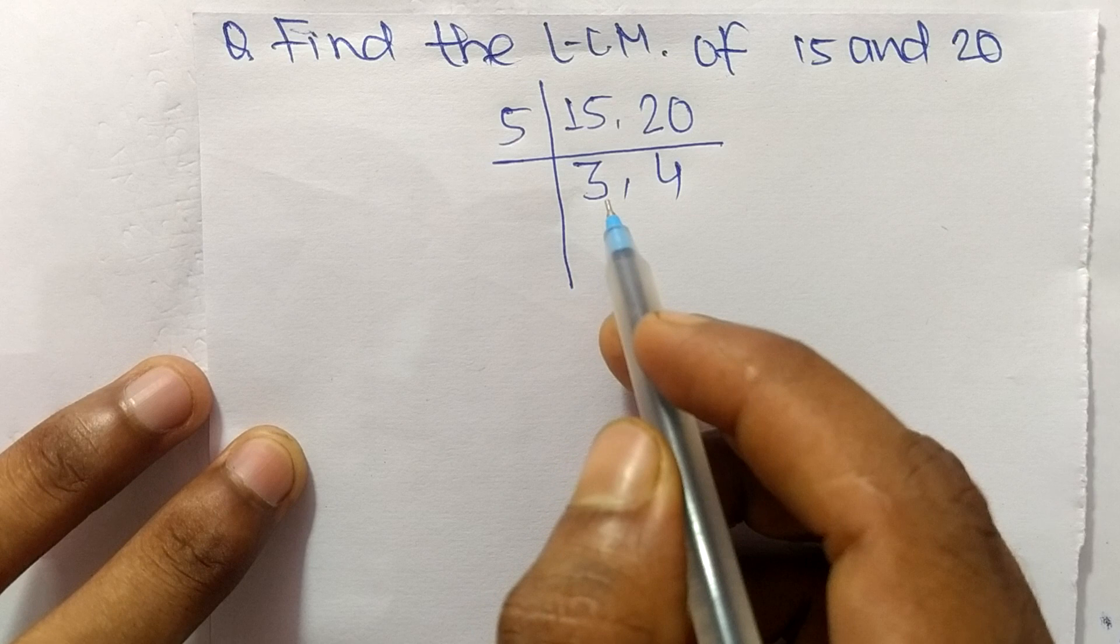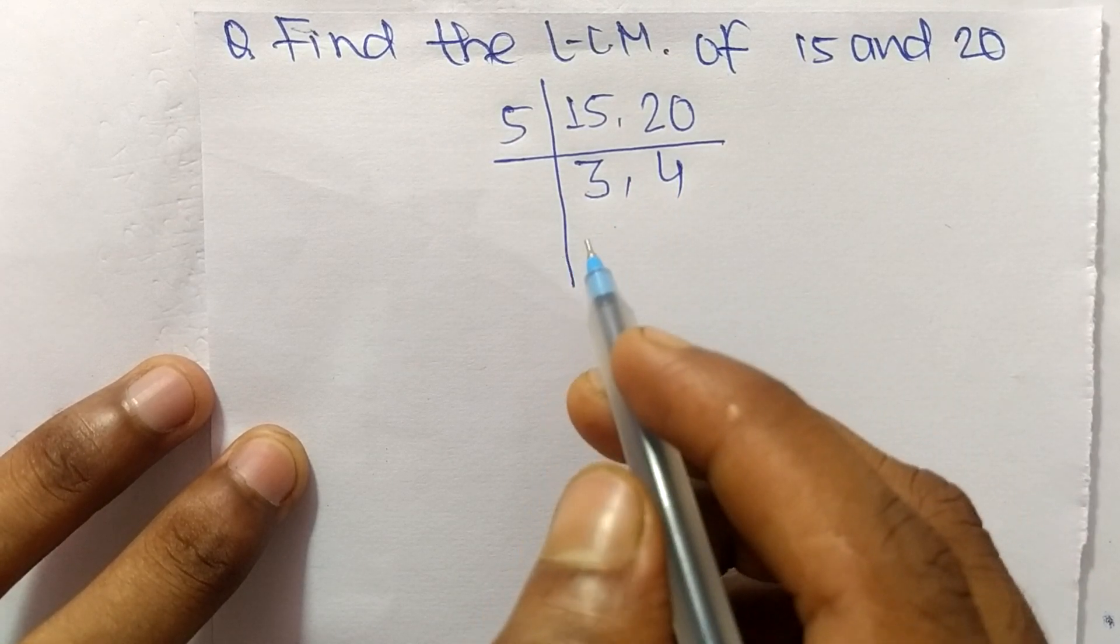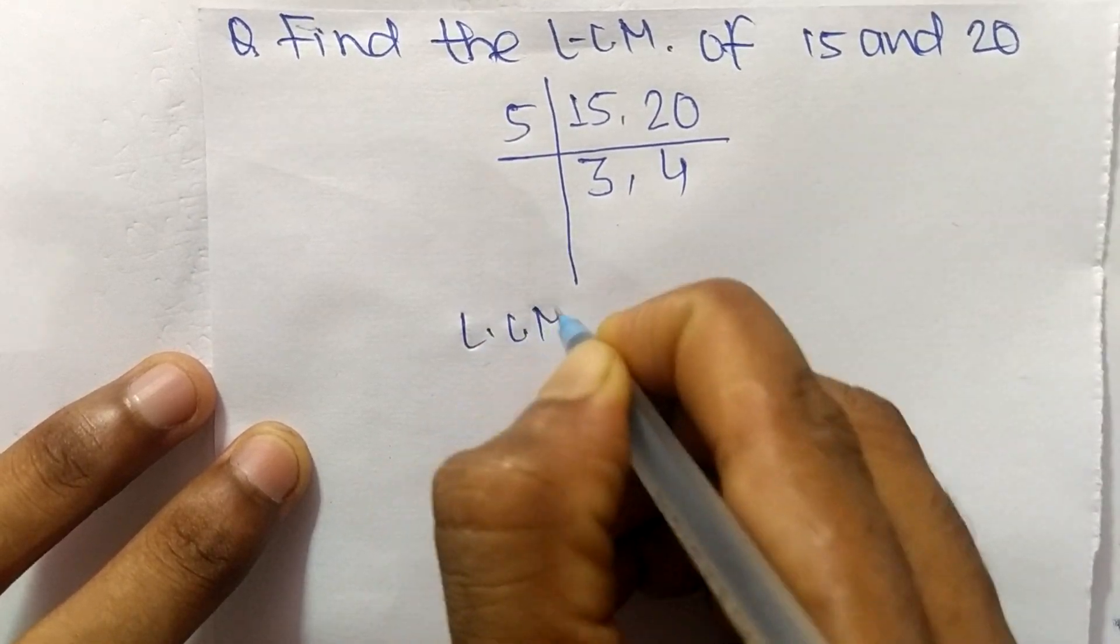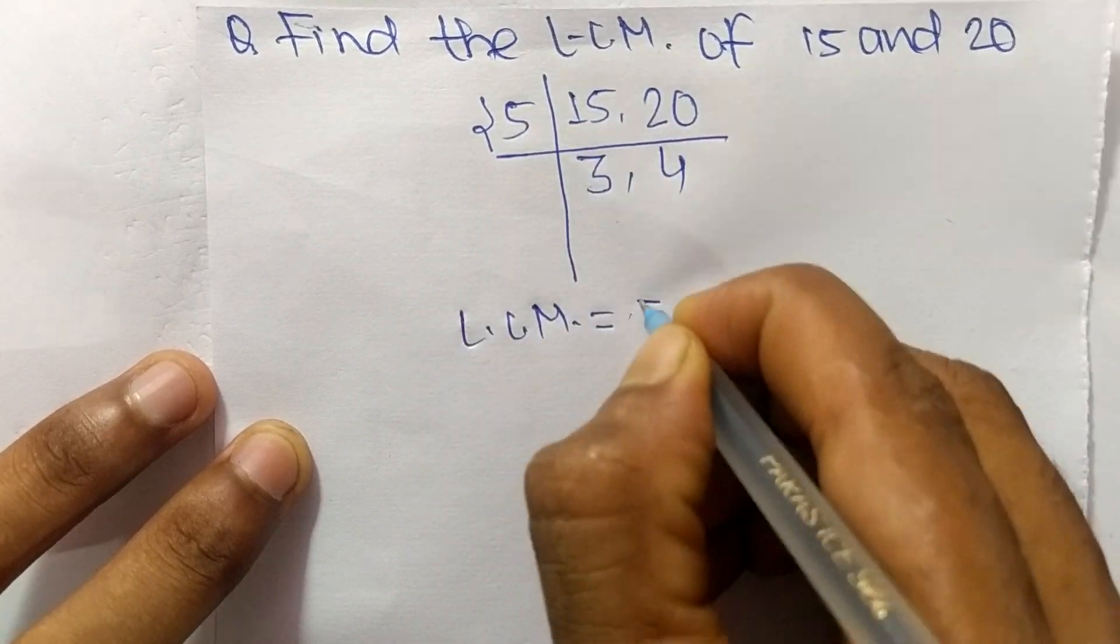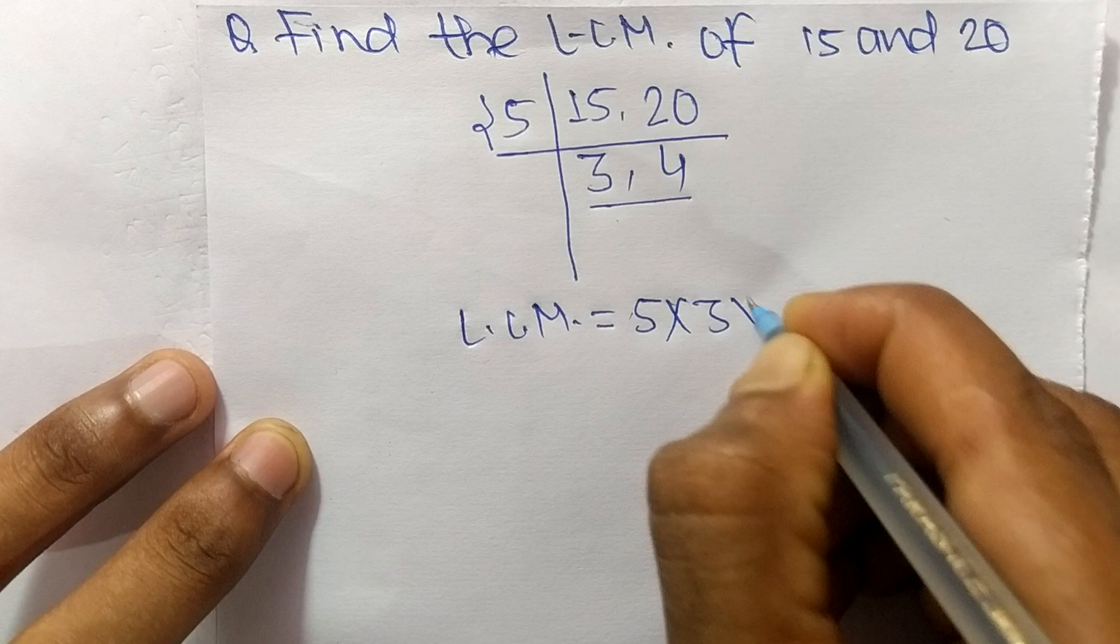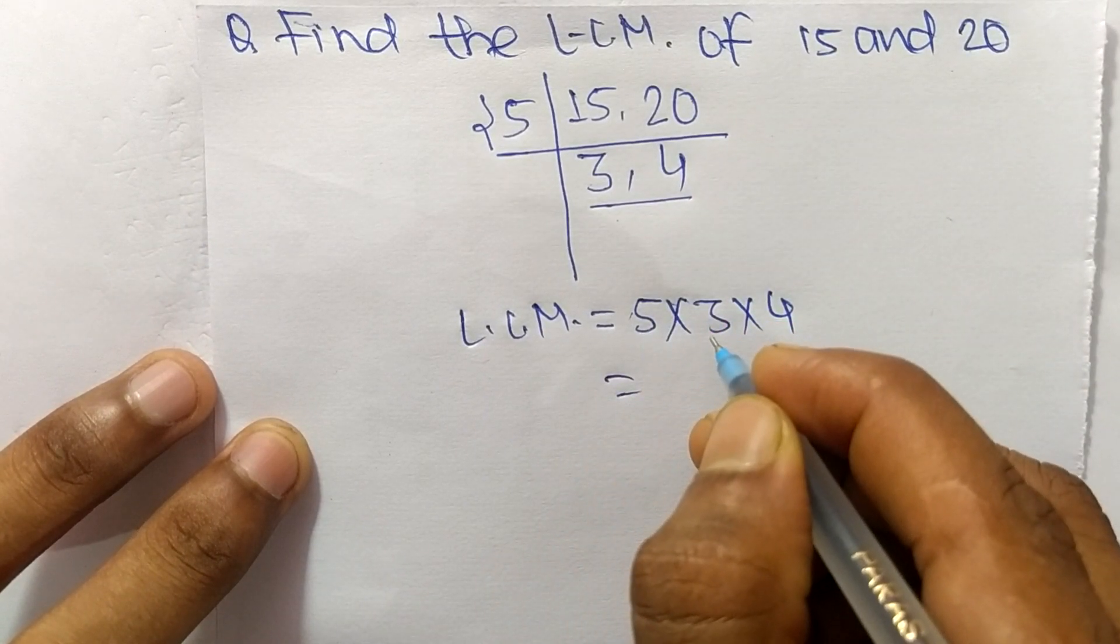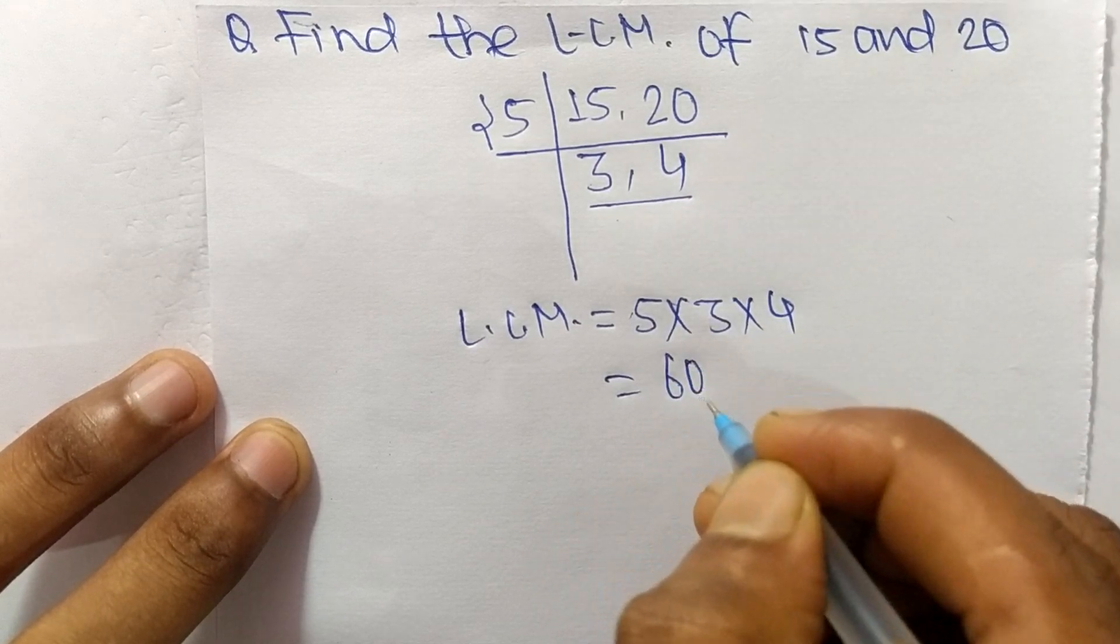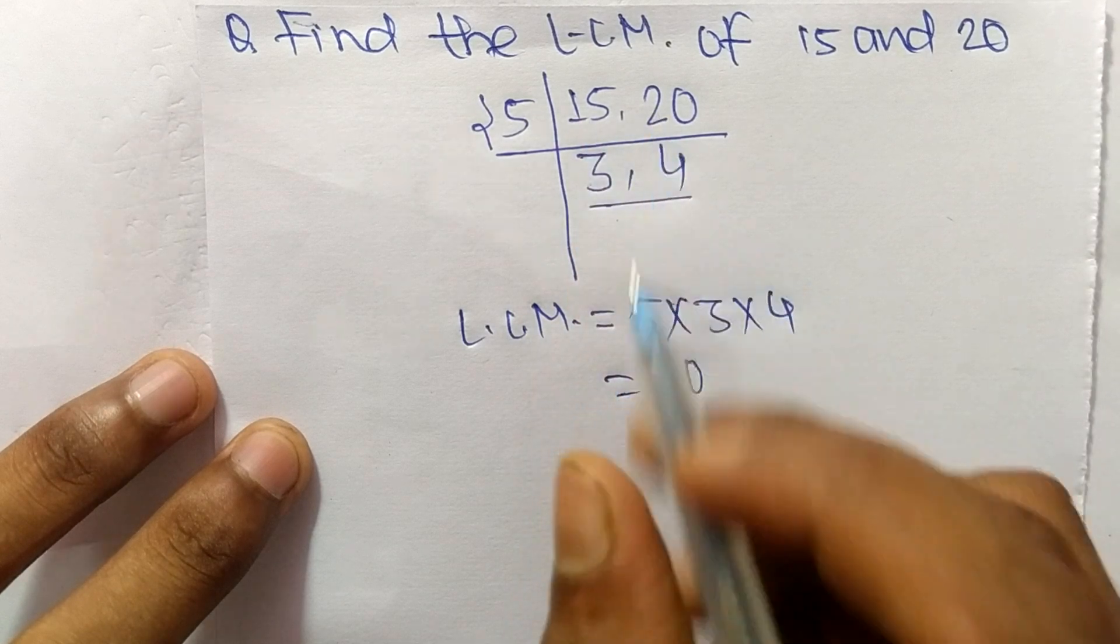Now we have here 3 and 4 which are not exactly divisible by the same number, so its LCM is equal to, from this part it is 5, and from here it is 3 times 4. So 5 times 3 means 15, and 15 times 4 means it is 60. So 60 is the LCM of 15 and 20.